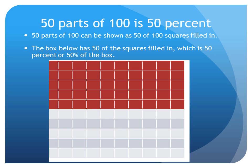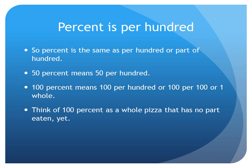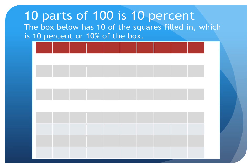The box has 50 of the squares filled in, which is 50% of the box. Now we know that percent is the same as per 100, or part of 100, so we understand that 50% means 50 per 100. And 100% means 100 per 100, or one whole. Think of 100% as a whole pizza that has no part eaten yet. So 10% has 10 of the 100 squares filled in, which is 10% of the box of squares.